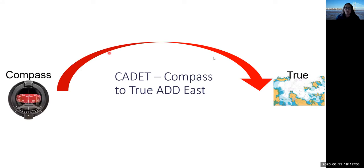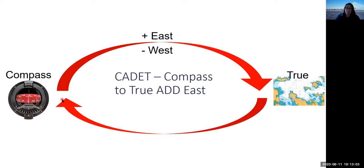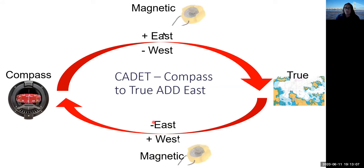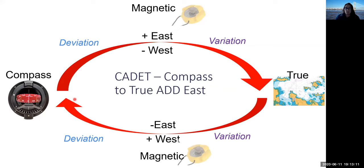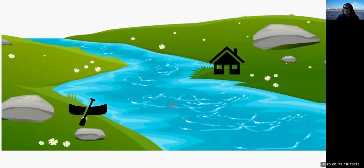A quick revision of compass-to-true bearing conversion: we use the word CADET — add east. So going from compass to true, add easterly variation. Going the other way from true to compass, we do the opposite. Magnetic bearings sit in the middle: apply deviation between compass and magnetic, and variation between magnetic and true.